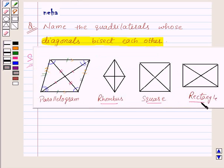All these three are parallelograms, so that means they all satisfy the properties of parallelograms, or we can say that their diagonals also bisect each other.